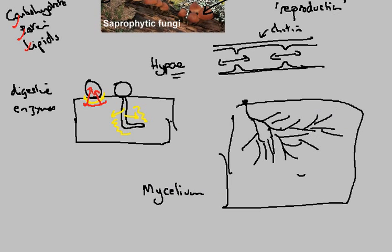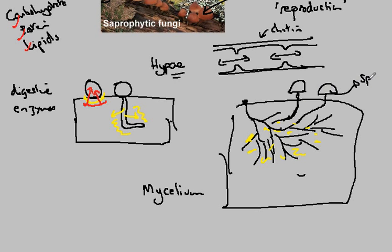Gradually, what it's doing is digesting away all of the wood, and that is absorbed by the fungi for its own growth. At some point in the process, the fungi obtain sufficient nutrient that it comes back to the surface — the mycelium — and the hyphae come back to the surface and form structures which are going to spread the spores so that the process can carry on again.